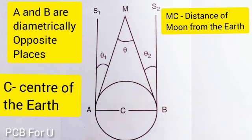Now, the diagram is the textbook level diagram. A and B are two positions on the Earth. C is the center of the Earth, and S1, S2 are two distant stars.